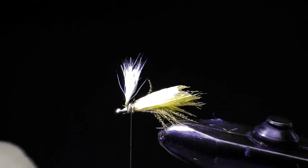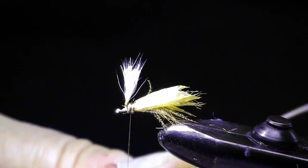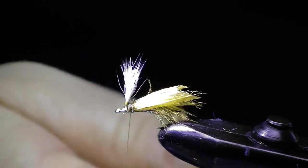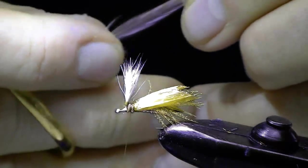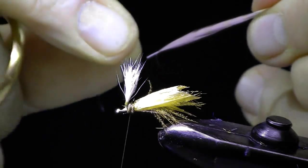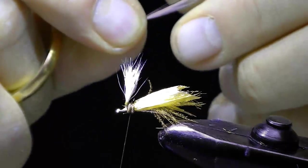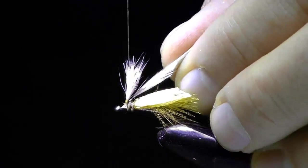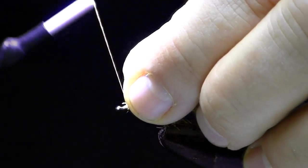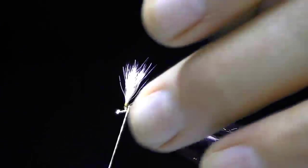I've got a ginger or a variant barred hackle from Whiting. I clip it off and strip it. I leave plenty of stripped quill on this particular pattern because not only am I tying it in on the back, I'm going to tie it in the front.